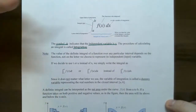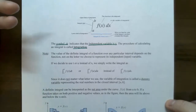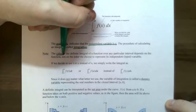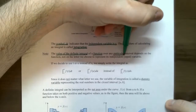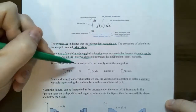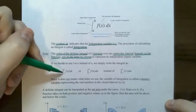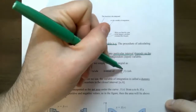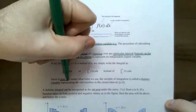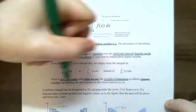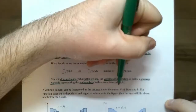You do not need to always use x as the independent variable. You could find an integral where the variable of integration is t representing time, or any arbitrary variable. The value of the definite integral over a particular interval depends on the function, not on the letter chosen for the independent variable. So the integral from a to b of f(t) dt equals the integral from a to b of f(u) du, which equals the integral from a to b of f(x) dx — they all give the same value. The variable is called a dummy variable because it does not indicate any relationship.